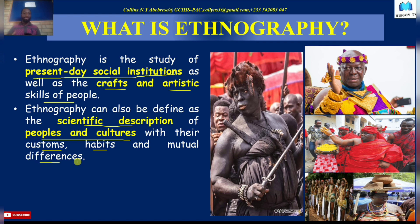These social institutions make up the culture aspect of the people. Scientifically, it means that you go to the people, you interact with them and learn about their culture together with their customs and their habits, and then the mutual differences in some of these things. When you are studying the present-day social institutions and craft and artistic skills of a group of people, you are basically also studying the culture of the people. Studying the customs of all these people would help you to understand the people and where they are coming from. That is what ethnography seeks to achieve.